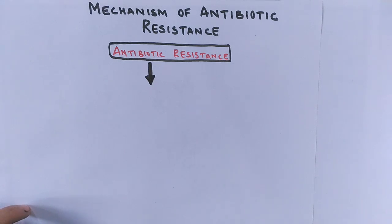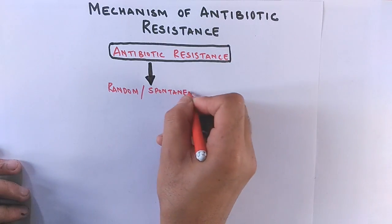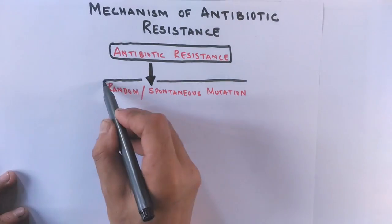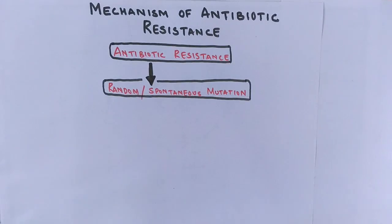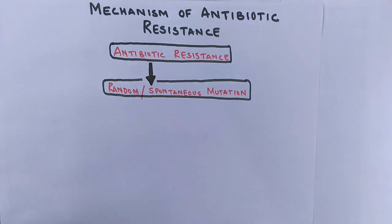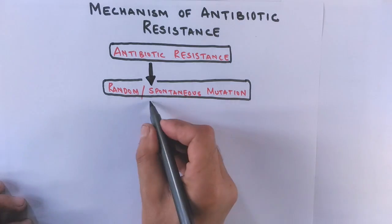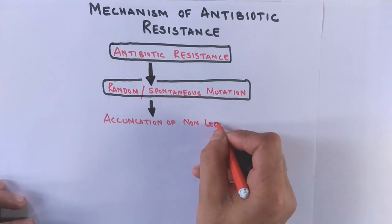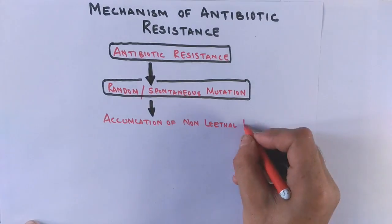When there is antibiotic resistance, the bacteria displays random or spontaneous mutation at the genomic level. This mutation is always in favor of the organism because it enables survival in unfavorable conditions — that is, when antibiotic drugs are present. So we can say the mutation is non-lethal.